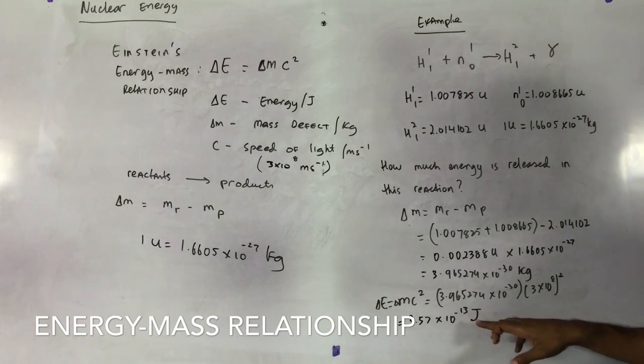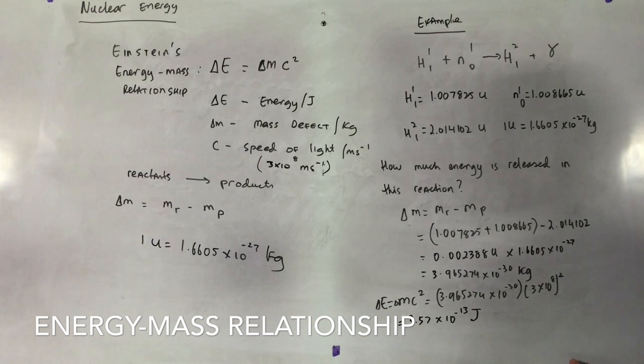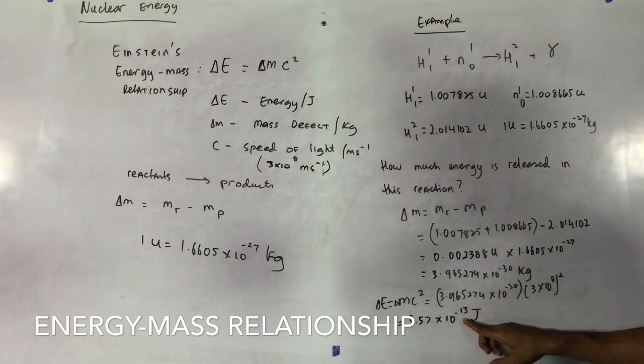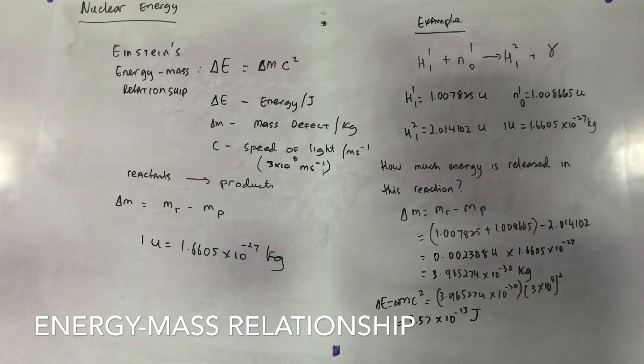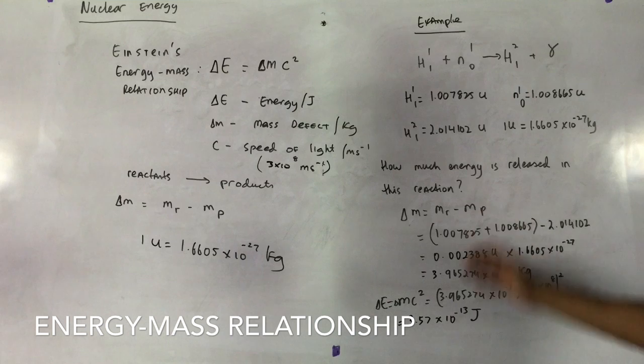If you get something positive, big values, that definitely, you know, you're wrong. So therefore, look for the range minus 11, minus 12, minus 13. That's generally what you work with. So that's it for nuclear energy.